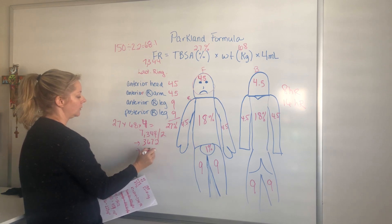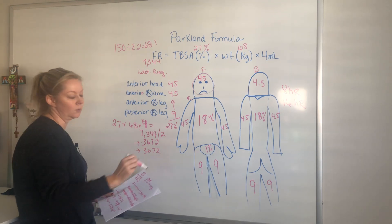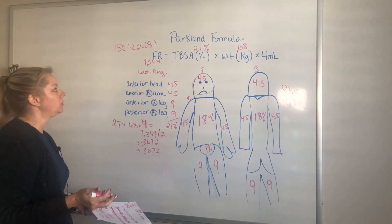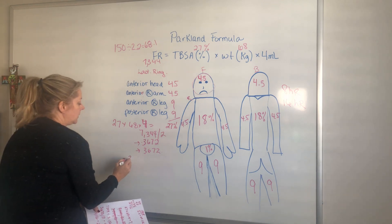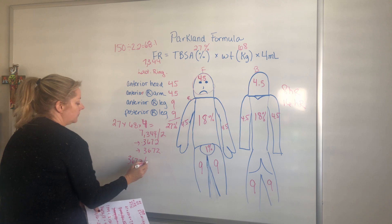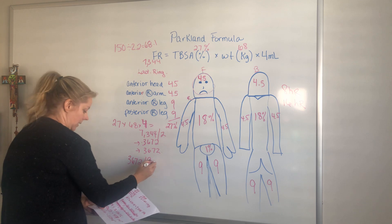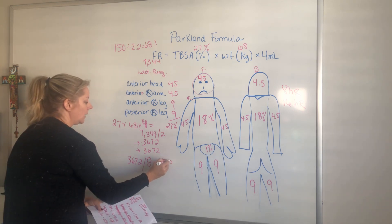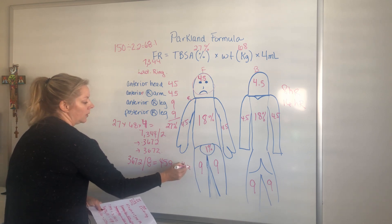The first half is 3,672 mL, given over eight hours. Then the other 3,672 mL is given over the next 16 hours. To set our pump, we take 3,672 divided by 8, which equals 459 mL per hour — that's what you set your pump to for the first eight hours.